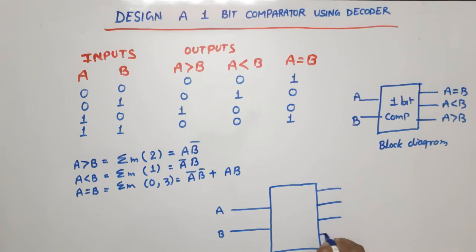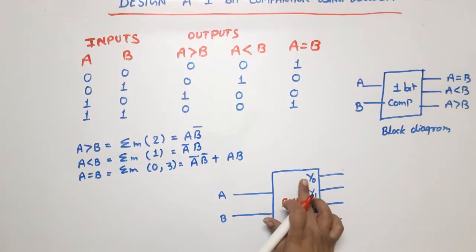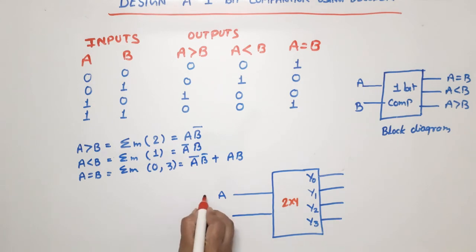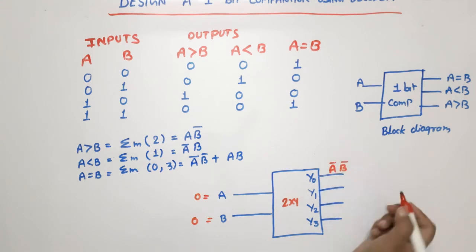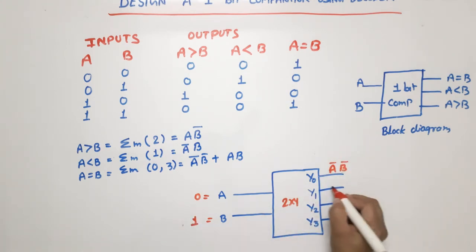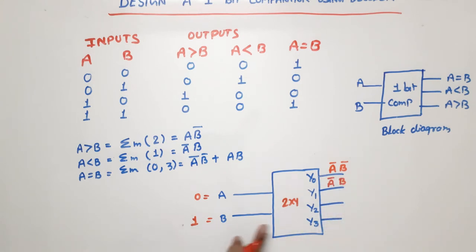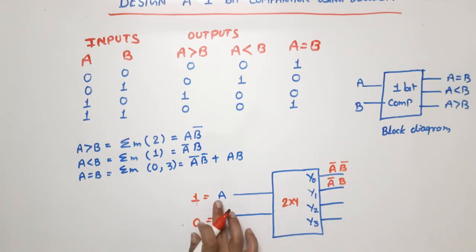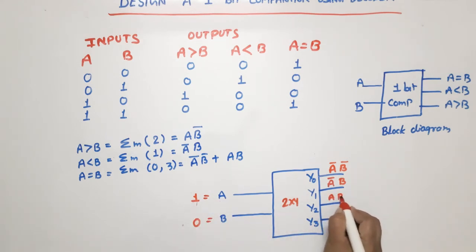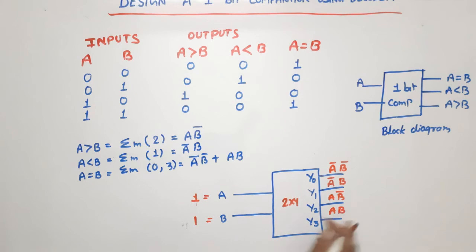The 2-to-4 decoder has outputs Y0, Y1, Y2, and Y3. Y0 is selected when A=0, B=0, giving A-bar·B-bar. Y1 is selected when A=0, B=1, giving A-bar·B. Y2 is selected when A=1, B=0, giving A·B-bar. Y3 is selected when A=1, B=1, giving A·B.